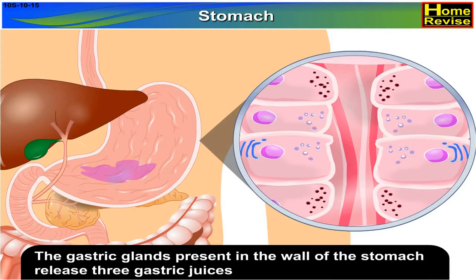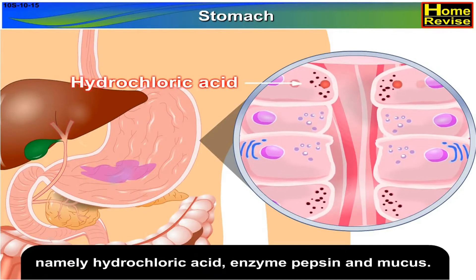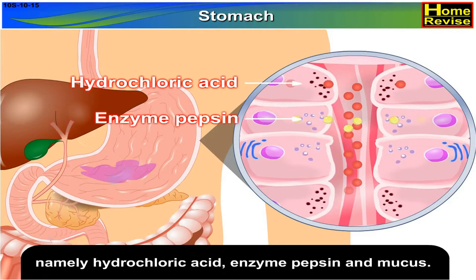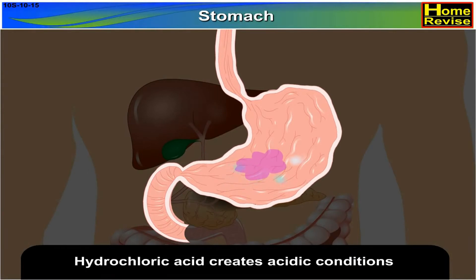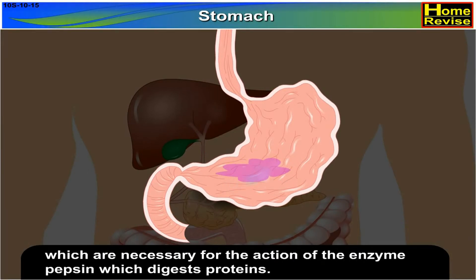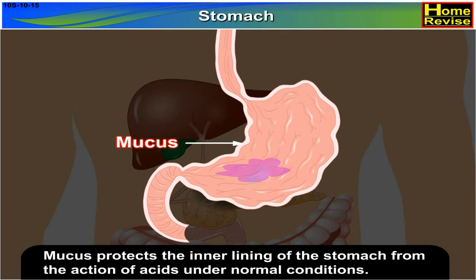The gastric glands present in the wall of the stomach release three gastric juices, namely hydrochloric acid, enzyme pepsin, and mucus. Hydrochloric acid creates acidic conditions which are necessary for the action of enzyme pepsin, which digests proteins. Mucus protects the inner lining of the stomach from the action of acids under normal conditions.